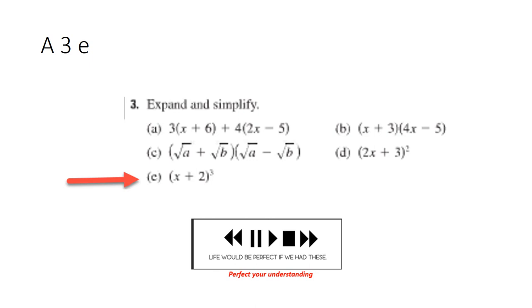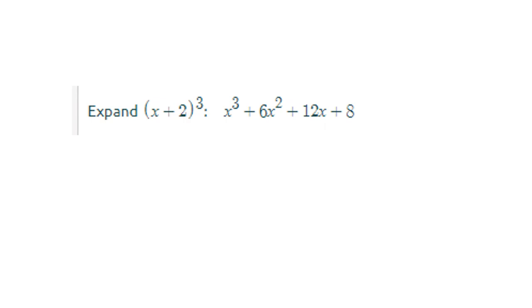Here's the third set of problems. Let's talk about part e. That is (x + 2)³. You know what to do. Let's see how you did. You should have gotten x³ + 6x² + 12x + 8.